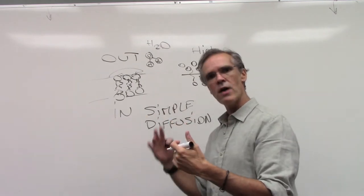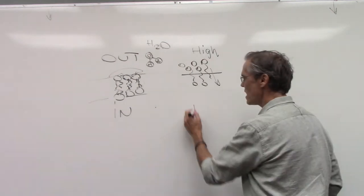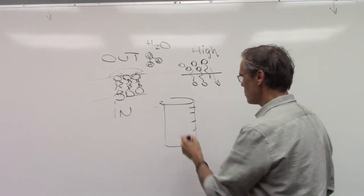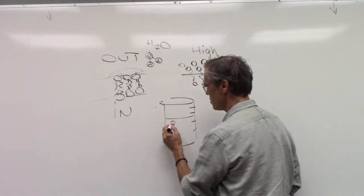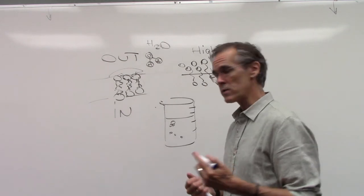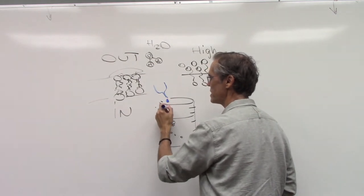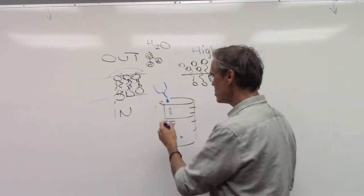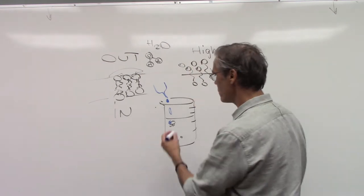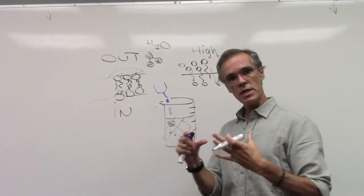Just imagine you have a beaker with water in it, and with a dropper you add a blue dye that falls into that water. You know what's going to happen — that dye is going to diffuse over time, even without stirring. That dye will diffuse all over the beaker, giving it a little tint of blue. Has anyone ever seen the opposite? Has anyone seen all the dye dissolved in water come back to a single dot? Nobody has seen that — that's never going to happen.